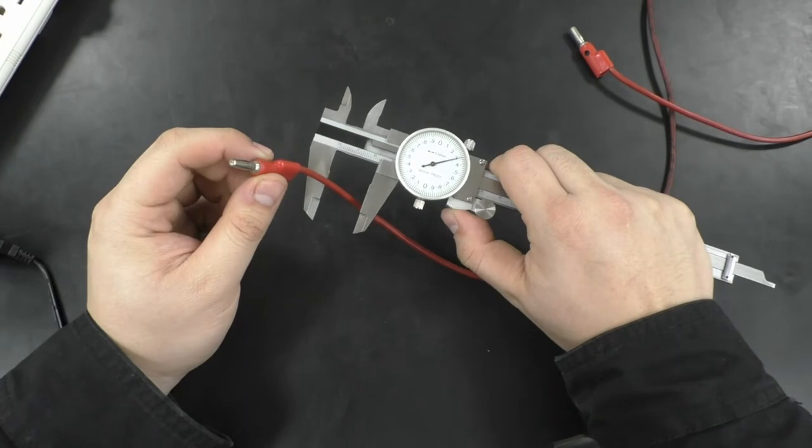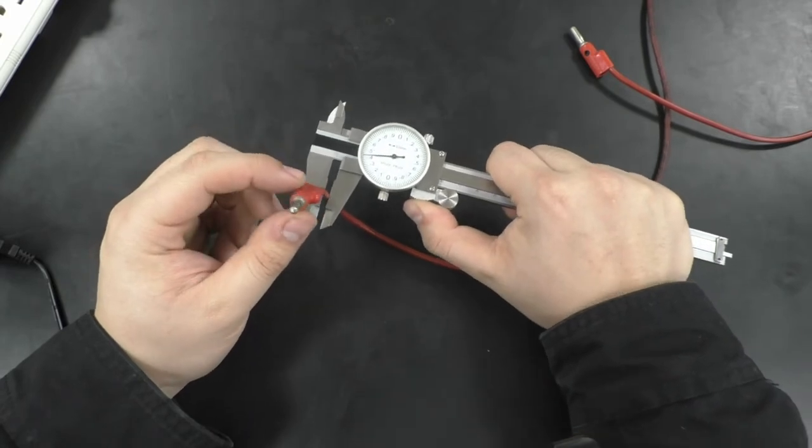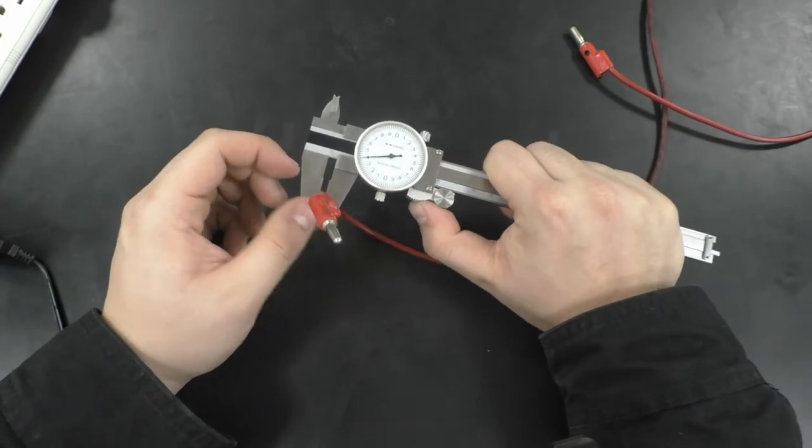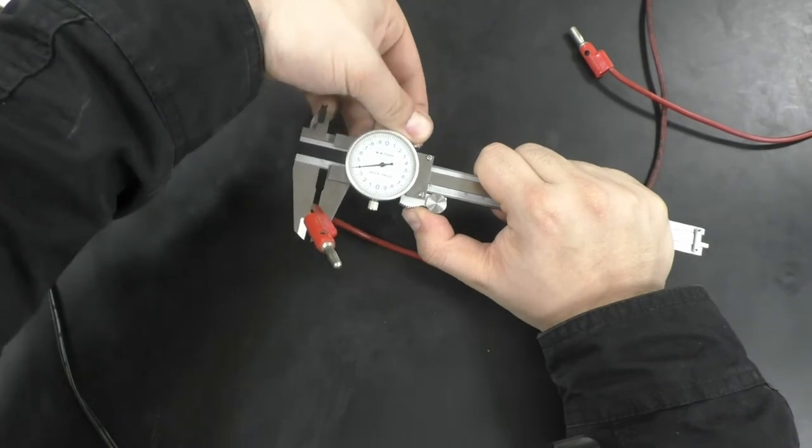Place the object in between and close the jaws all the way. To secure the jaws into place, twist the screw behind the dial.